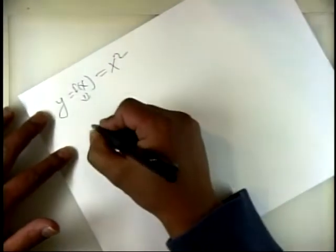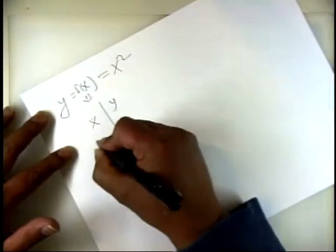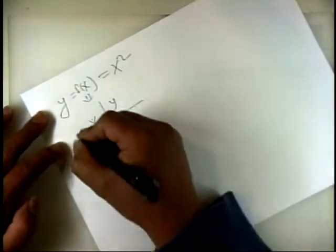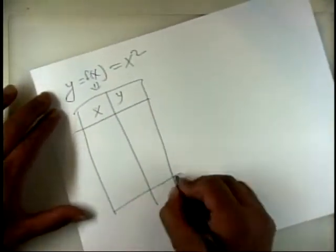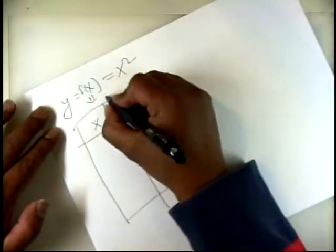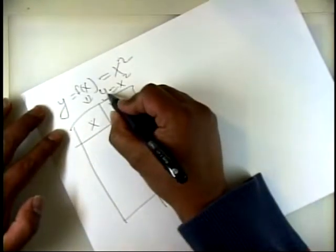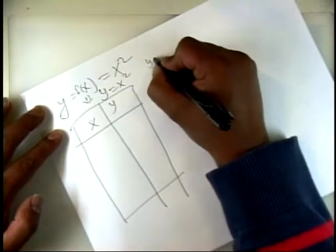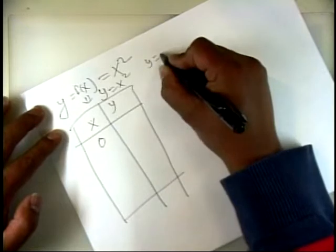Now we are going to make a table for x and y. This will be y equal to x squared. When you plug in x equal to 0, y is going to be 0.